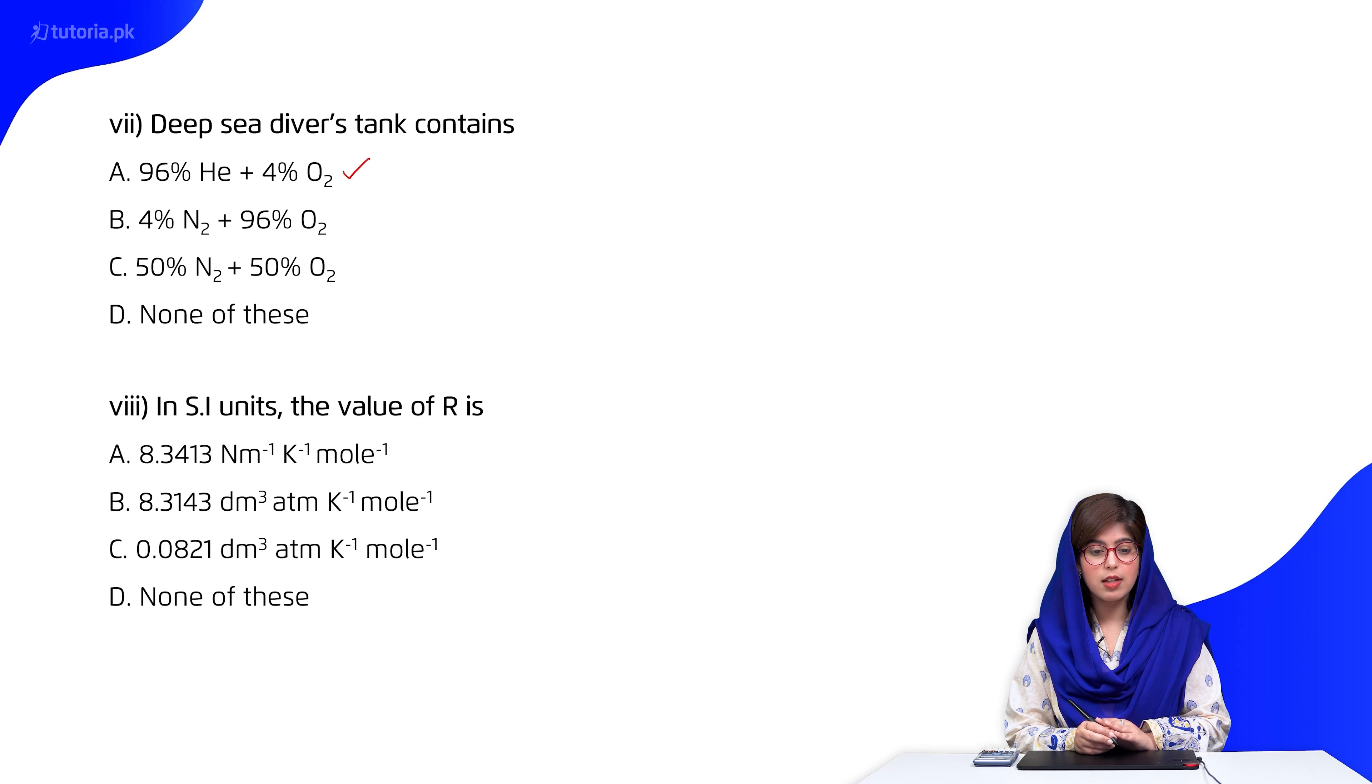Then students, moving forward, in SI units the value of R is: A 8.3413 newton meter per kelvin per mole, then comes B 8.3143, then 0.0821.